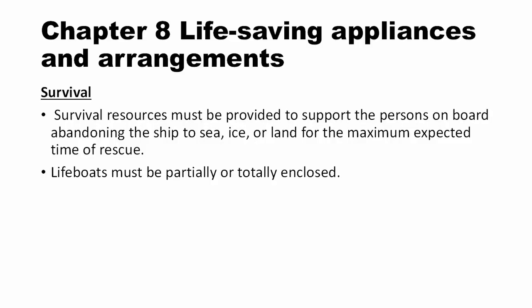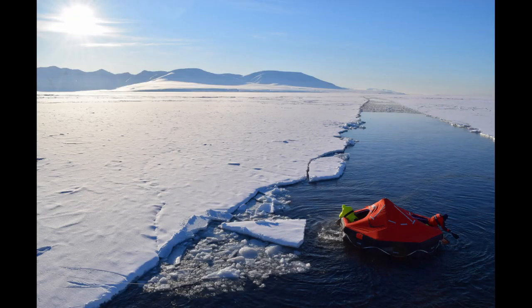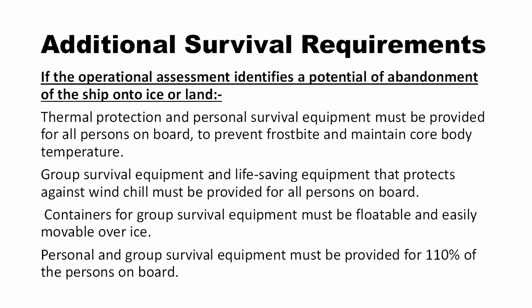Moving on to survival: in passenger ships, a proper-sized immersion suit and thermal protective aid should be provided for each person on board. The immersion suit must be of insulated type to keep the person alive in cold weather. If polar ships operate during continuous darkness periods, a searchlight should be provided for each lifeboat to identify icebergs or missing persons. Lifeboats on polar ships must always be either fully enclosed or partially enclosed. Personal and group survival equipment must provide effective protection against wind chill, efficient thermal insulation to maintain core body temperature, and prevent frostbite at all extremities.